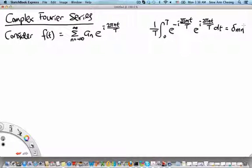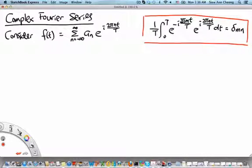Welcome to the MH2801 video segment on the complex Fourier series. In the earlier video segment, we have established the orthogonality relation between e^(i 2π mt/T) and e^(i 2π nt/T). When we multiply the two complex exponentials together, we need to take the complex conjugate of e^(i 2π mt/T) and then integrate from 0 to T and divide by 1 over T. This will give us delta_mn, which tells us that this integral is equal to 1 if m equals n and 0 otherwise.